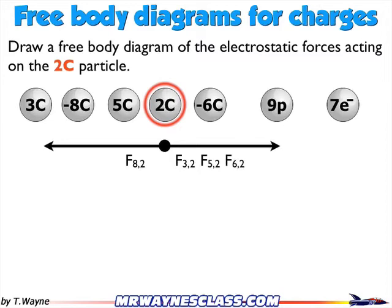The 9 and the 2: the 9 is protons, and protons are positive, as is the 2 Coulombs — so they're both positive charges and will be repelled from each other. The 2 Coulombs will be repelled from the 9, or pushed to the left. Finally, the 7 electrons: electrons are negative and the 2 Coulombs are positive, so since they're oppositely charged, they'll be attracted towards each other, and the 2 Coulombs will be attracted to the right.